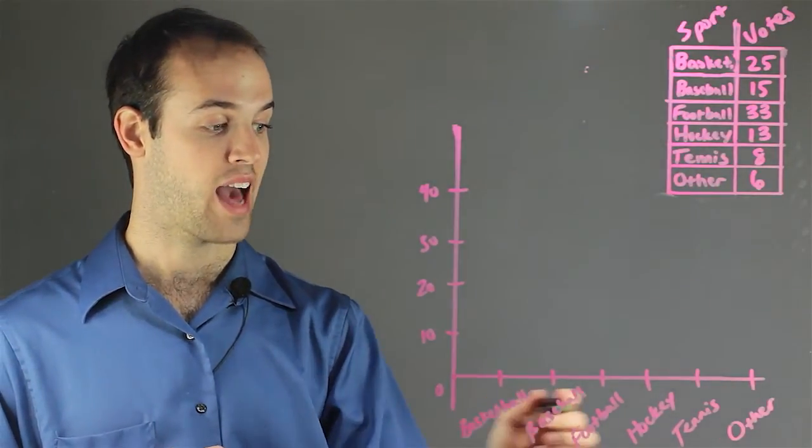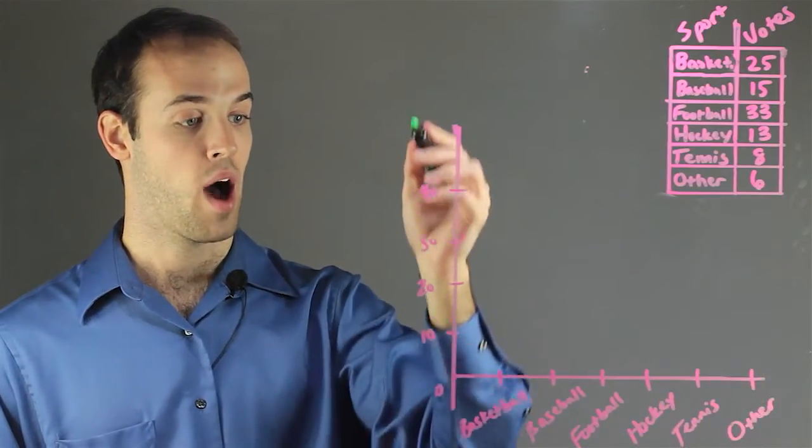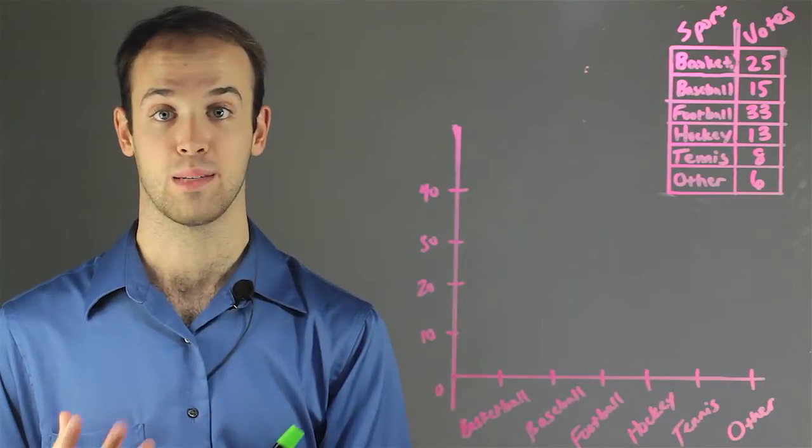So along the x-axis, I put the type of sport, and on the y-axis, I put the number of votes that that sport got.